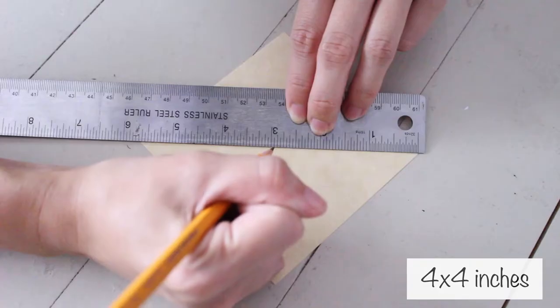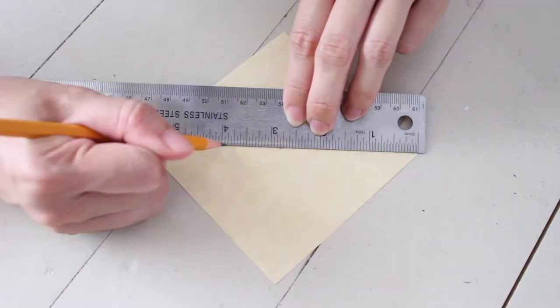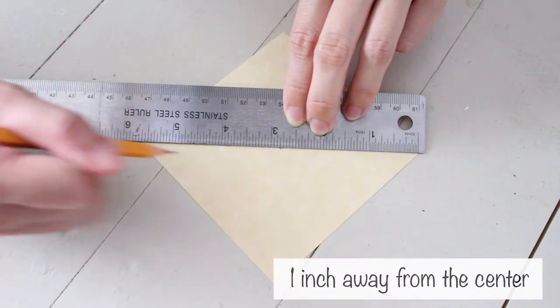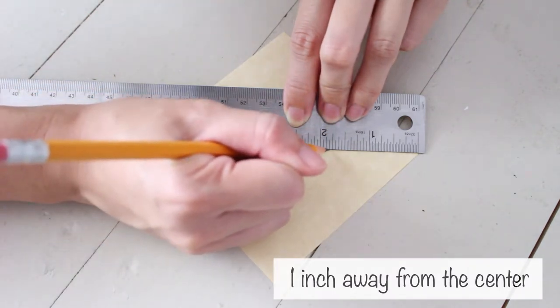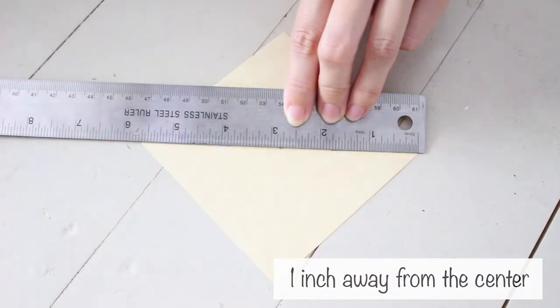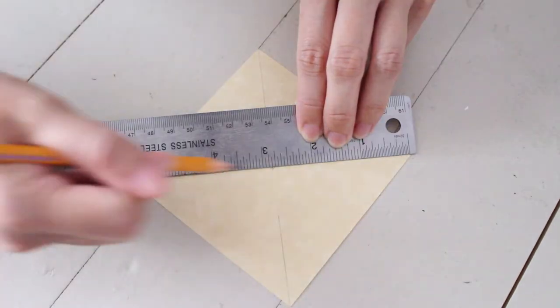Place your ruler across the opposite corners and mark the middle. Draw lines 1 inch away from the center and do the same to the other corners.